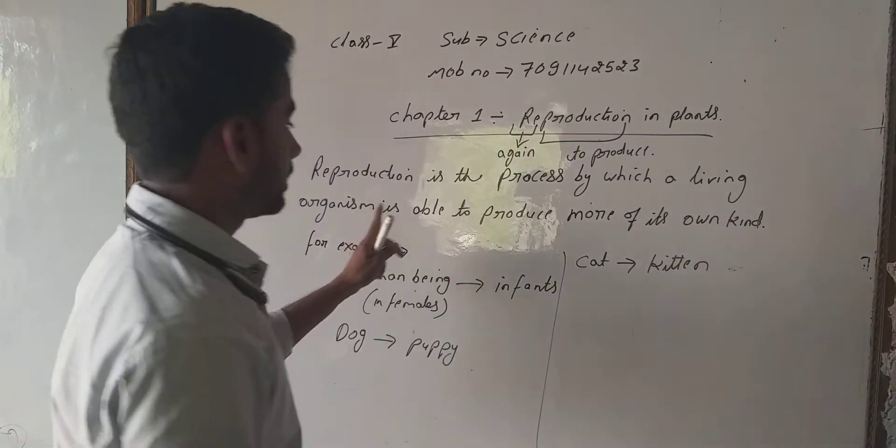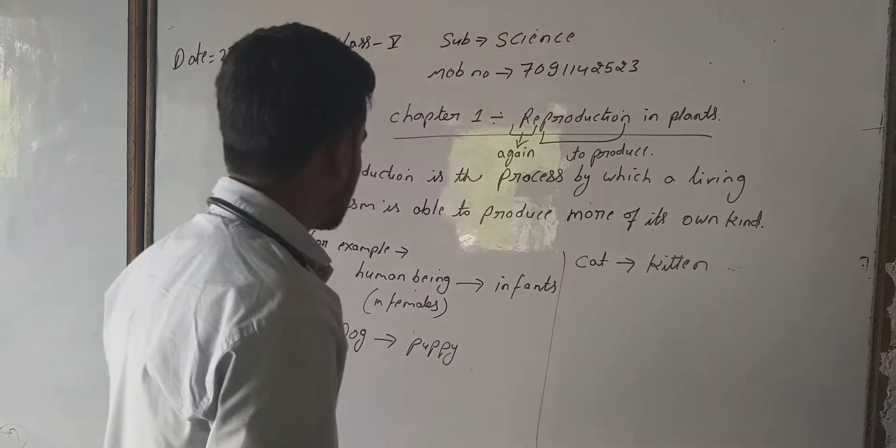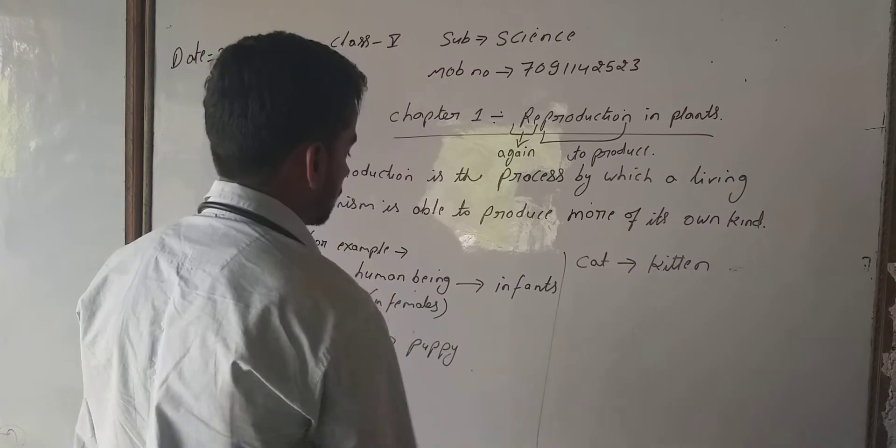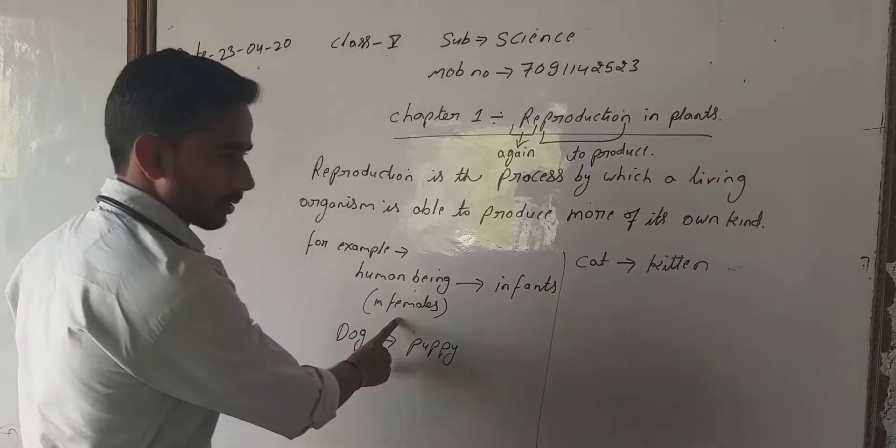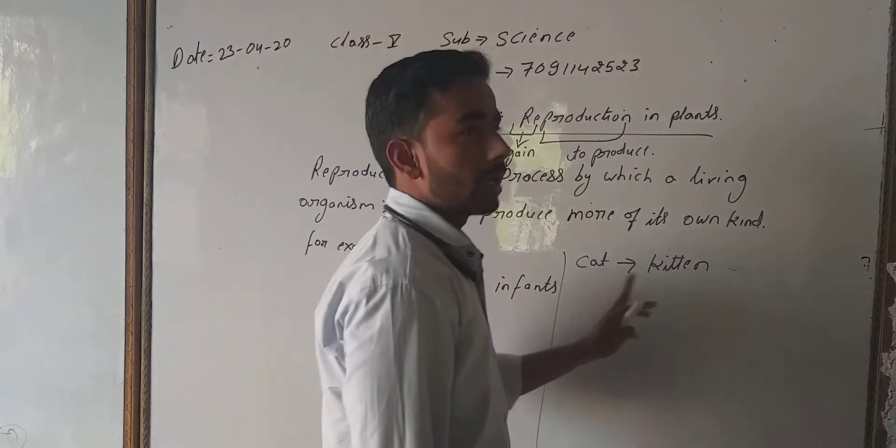For example, a human being can produce an infant, especially in females. A dog can produce a puppy, a cat can produce a kitten.